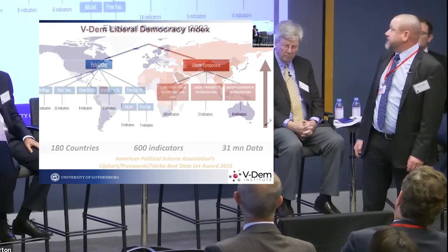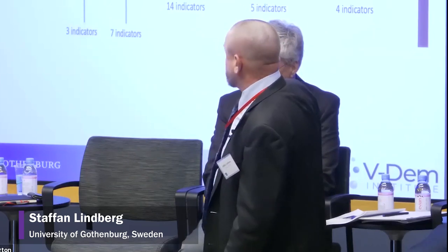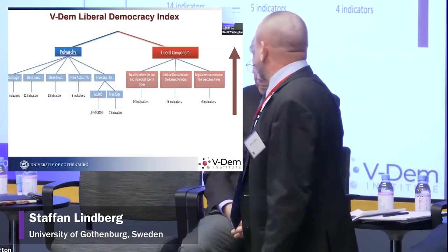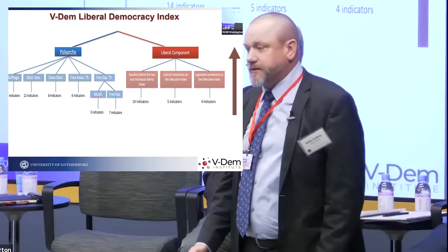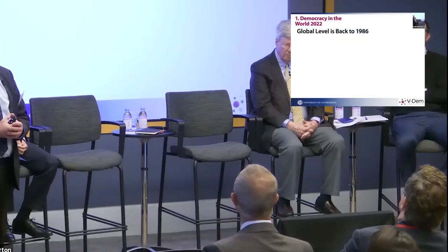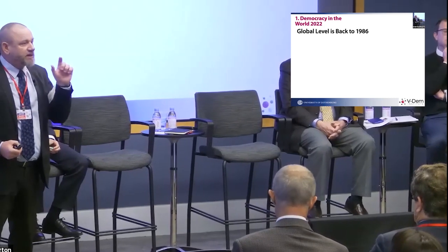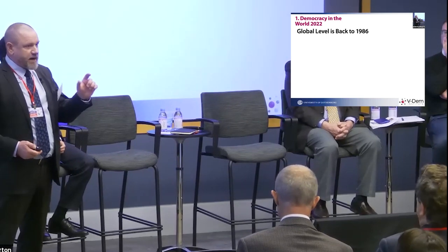This is what the data says: the global level of democracy — in terms of democracy enjoyed by the average global citizen — is back to 1986, the state of the world at end of 2022. For liberal democracy you need electoral democracy as a necessary but not sufficient condition, plus the liberal component: rule of law, rights, and executive constraints.